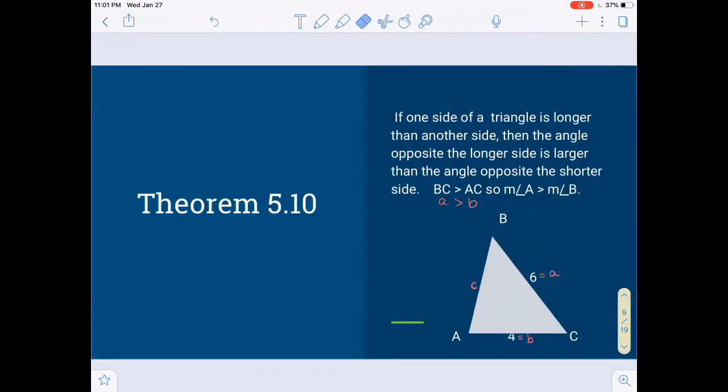We do have several theorems in this section. This first one, Theorem 5.10, says if one side of a triangle is longer than another side, then the angle opposite the longer side is larger than the angle opposite the shorter side. So here we have BC greater than AC. You can tell because of the lengths, 6 is greater than 4. So then the measure of angle A, whatever it might be, is going to be bigger than the measure of angle B. And if you'd like to use the little letters, you can.